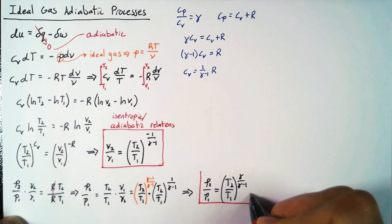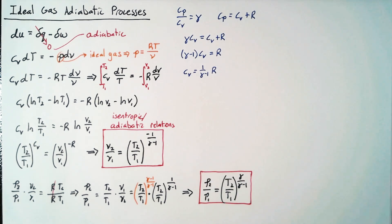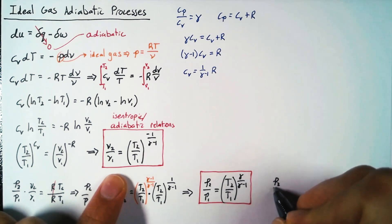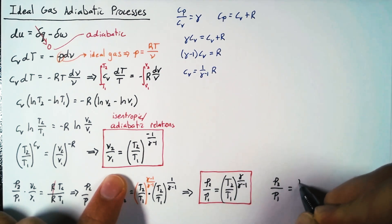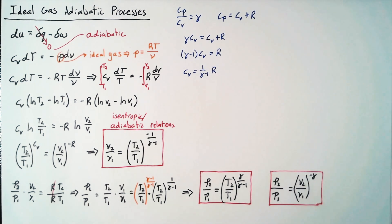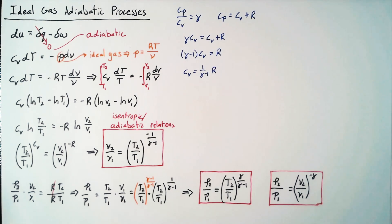That's the second of our isentropic relations. Using the first two together, we can write p2 over p1 equal to v2 over v1 to the negative gamma power — that's the final relationship. So we have three isentropic or adiabatic relations, which we can use whenever we're looking at adiabatic processes — things that will frequently come up as we start looking at Otto and diesel cycles.